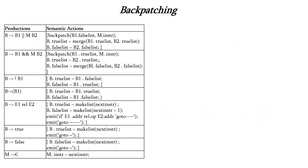Now let us see the grammar and semantic actions associated with the backpatching concept. We have productions which include OR operation, AND operation, NOT operation, assignment operation, logical expression, and boolean operators true and false. We also have a variable M which derives epsilon. The purpose of M is to store the address of the next instruction. For each left-hand-side variable we will have a true list and a false list.